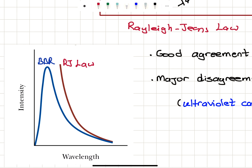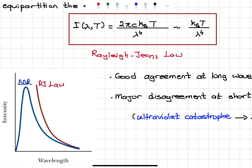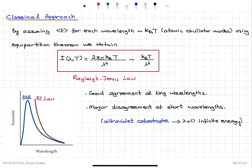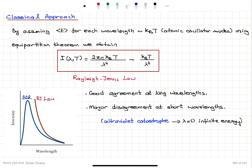If we compare the experimental result, the black-body radiation (shown in blue) basically follows an increase with decreasing wavelengths, has a maximum, and then decreases as the wavelength goes to zero. However, if you look at Rayleigh-Jeans law carefully, as lambda goes to zero, this is going to blow up. The classical approach gives very good agreement at high wavelengths, but fails at low wavelengths — a major disagreement at short wavelengths. The fact that intensity blows up as lambda goes to zero is known as the ultraviolet catastrophe: lambda equal to zero should have infinite energy, which is unrealistic. So there is clearly something wrong with this classical approach.